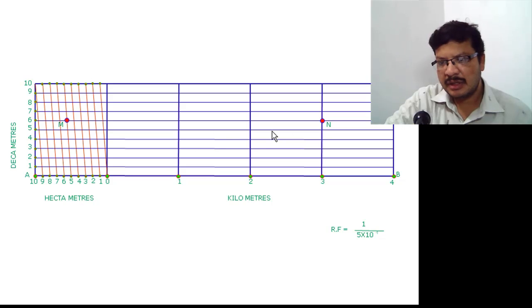That means the line joining Mn is representing the given length. This is the required line. Draw the extension lines. Then draw a dimension line. And write the dimension note as 3.56 kilometers.